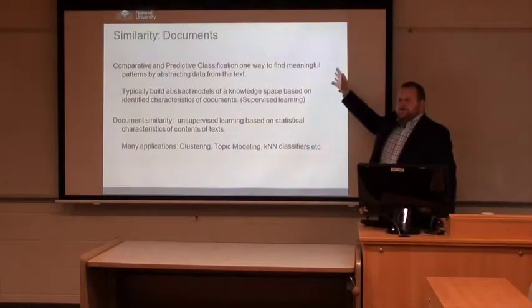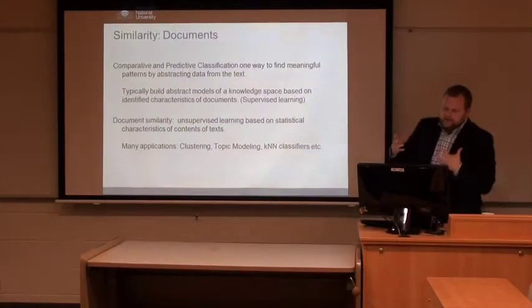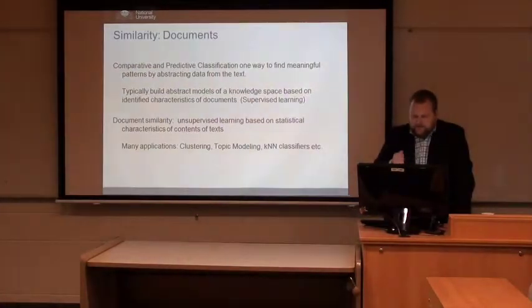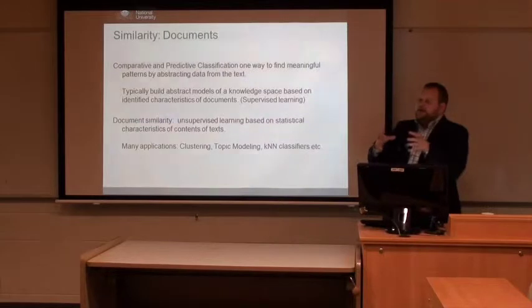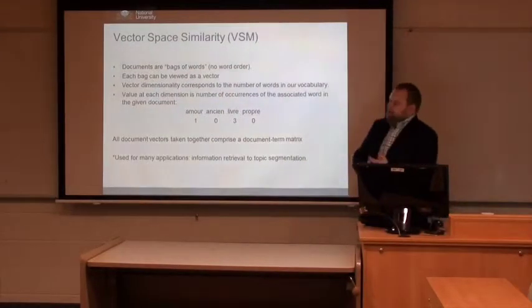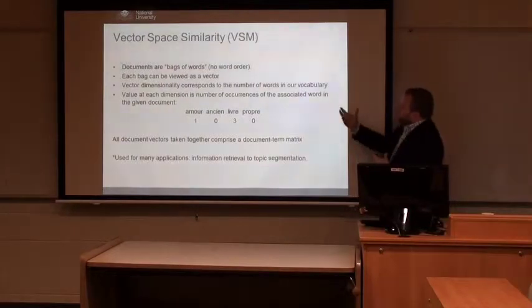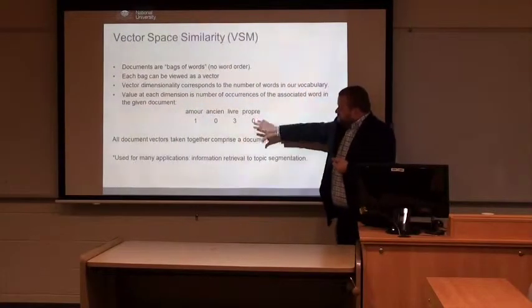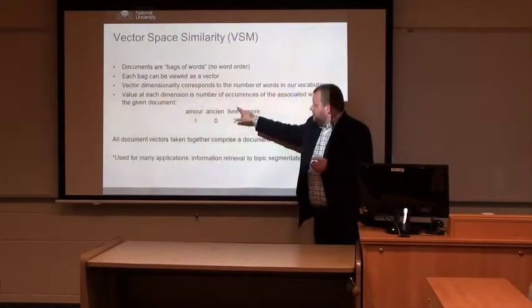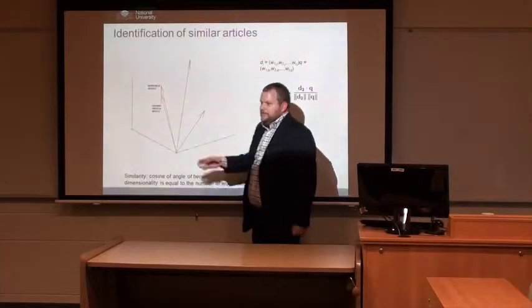Then we get to the idea of similarity — how we cluster classes of knowledge. Topic modeling is all the rage in digital humanities, but it's the same sort of idea: taking a text, breaking it into its constituent parts, and mapping how similar it is to other pieces of text. One way to do this is vector space similarity. Documents are treated as a bag of words — unfortunate term, but there it is. No word order. You map documents into vectors in this sort of incremental space. With a vocabulary of four words, one document might have a word three times and another once — that becomes a vector you can map to another vector. The closer they get, the more similar they are.